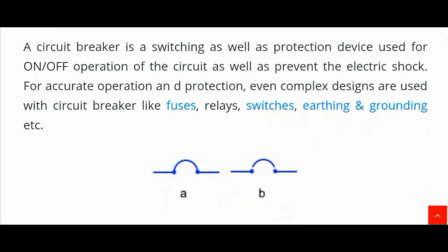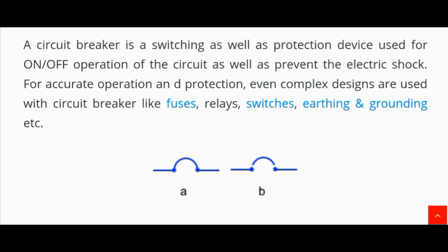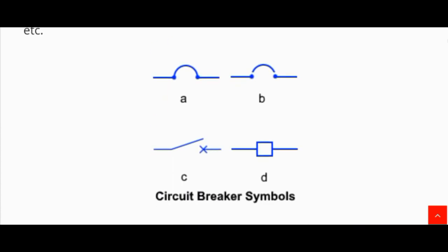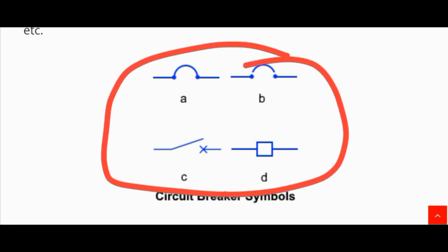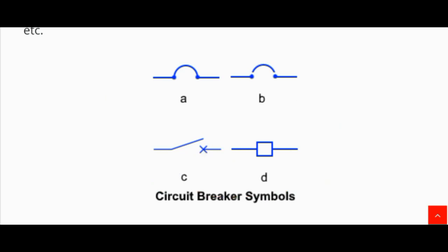A circuit breaker is a switching as well as protection device used for on and off operation of the circuit, as well as to prevent electric shock. For accurate operation and protection, even complex designs are used with circuit breakers — like fuses, relays, switches, earthing and grounding, etc. Here are the symbols of a circuit breaker — there are four common symbols shown.